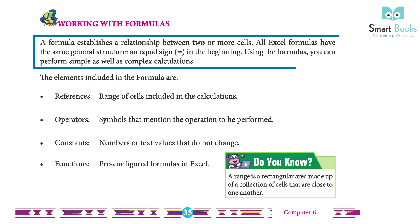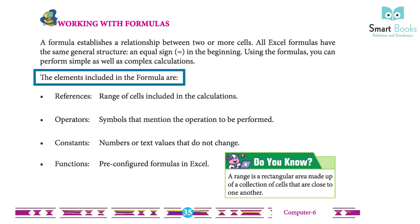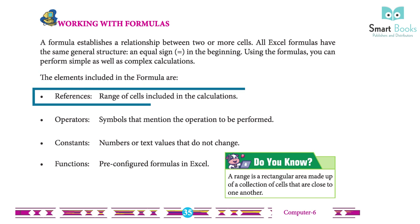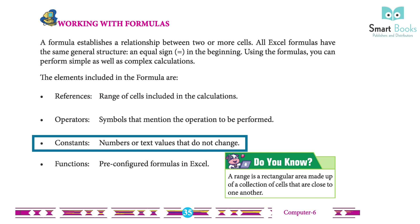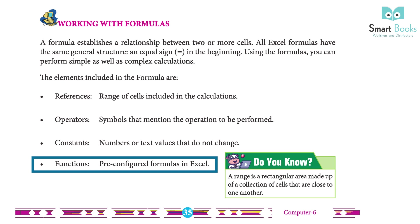A formula establishes a relationship between two or more cells. All Excel formulas have the same general structure: an equal sign at the beginning. The elements included in a formula are: References, Range of cells included in the calculations, Operators — symbols that mention the operation to be performed, Constants — numbers or text values that do not change, and Functions — pre-configured formulas in Excel.